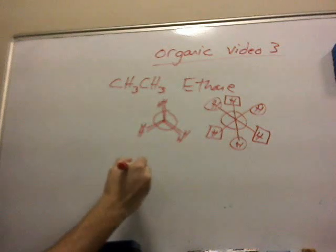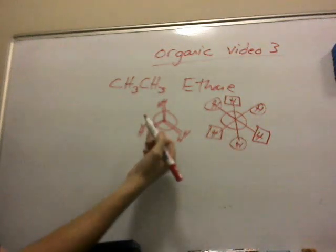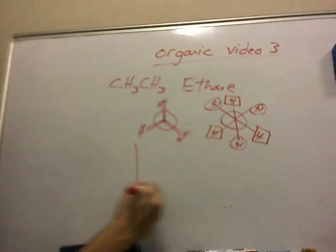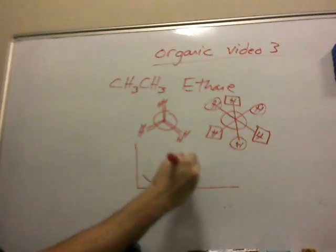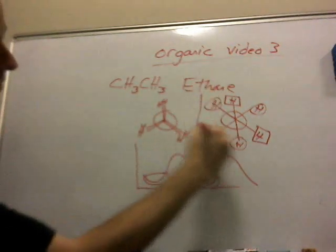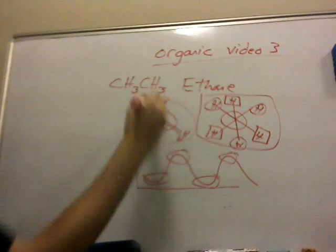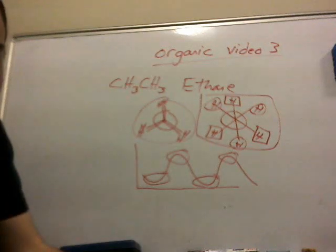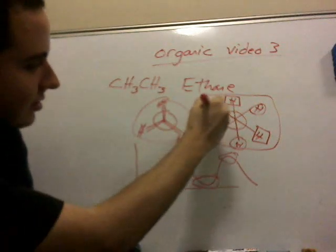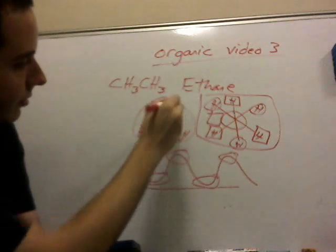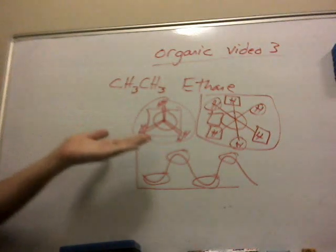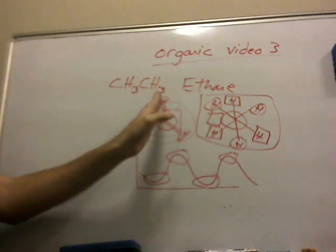The staggered form requires less repulsion, so ethane is in a constant state of going between these staggered and eclipsed formations. On an energy graph, you'll have the low points corresponding to the staggered formation and the high peaks corresponding to the eclipsed formation. If you have a large number of ethane molecules, roughly two-thirds will be in the more stable staggered position and one-third in the eclipsed formation. This also means it's easier to break the bonds between the two carbons in the eclipsed formation.